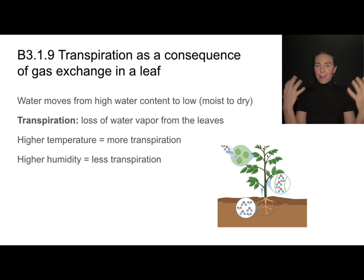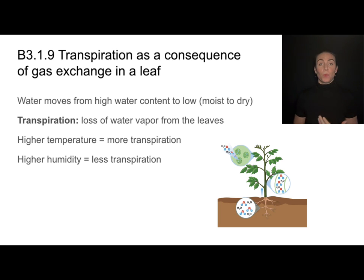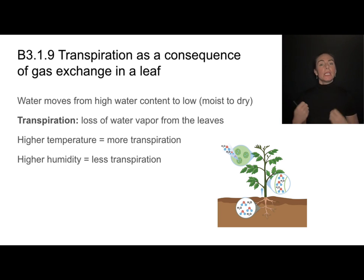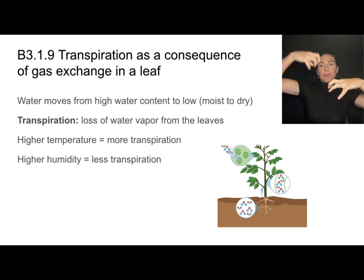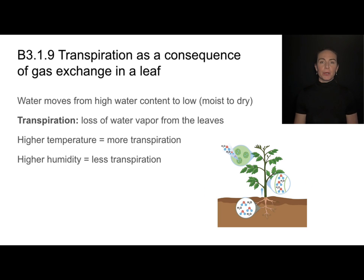Gas exchange is necessary to get carbon dioxide in and oxygen out, but one consequence of having those stomata open is that the plant will experience water loss. Water moves from areas that are very moist to areas that are dry — that's why we set clothes out to dry in a dry area, not a moist bathroom. This water loss is called transpiration — the loss of water vapor from the leaves. Water evaporates through the stomata, and that water vapor evaporating pulls water molecules up through the xylem and the root, which is covered in another topic.